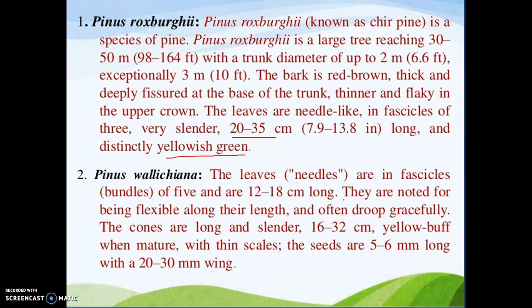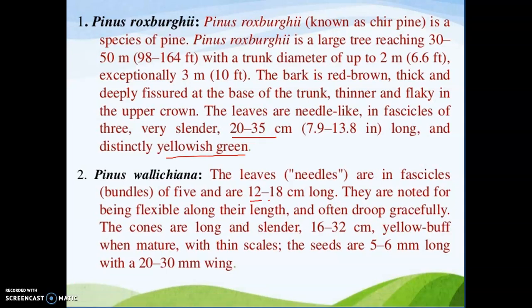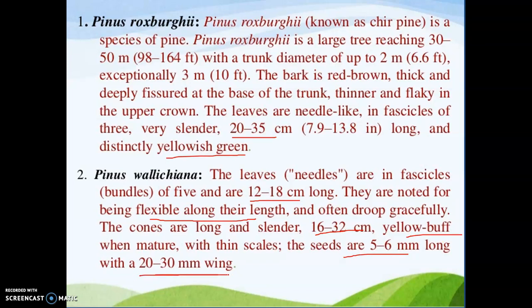In Pinus wallichiana, the leaves contain five needles in a single fascicle and are 12 to 18 centimeters long. The needles in this species are very long and are noted for being flexible. Cones are 16 to 32 centimeters long, yellow-buff in color, and seeds are 5 to 6 millimeters long with 20 to 30 millimeter wings.